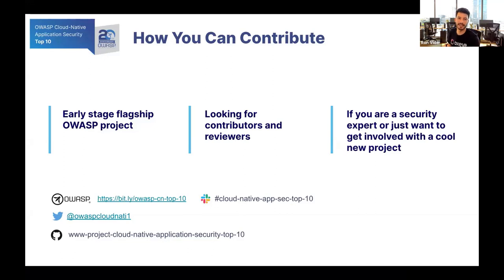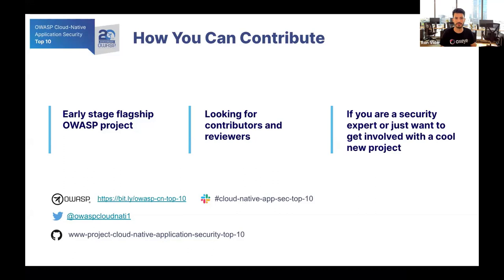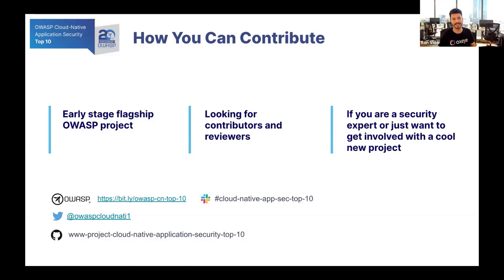The Cloud Native Application Security Top 10 Risks flagship project is still under development. We are looking forward to building a major OWASP project, and to do so we need your help. These projects are created by the community for the community, and this is your chance to get involved in one of the earliest parts of the project. It doesn't matter if you've never contributed to an open source project before, or if you have less experience — you are still more than welcome. At the moment we are looking specifically for contributors and reviewers. To anyone who wants to get involved, or even just wants to keep up to date with the project, feel free to join us in our Slack channel, Cloud Native AppSec Top 10 in the OWASP workspace, on our Twitter, and the GitHub project.